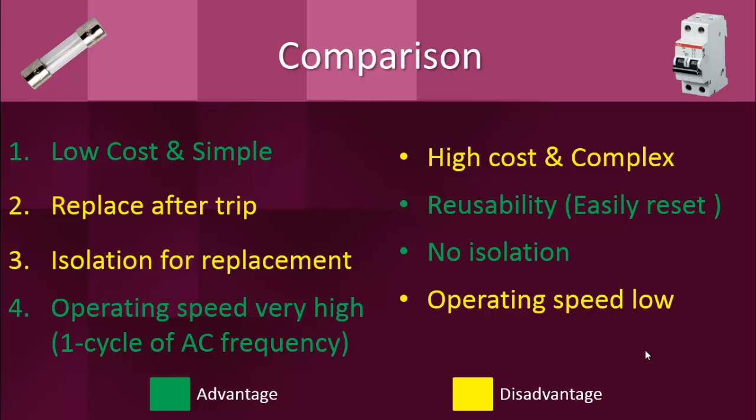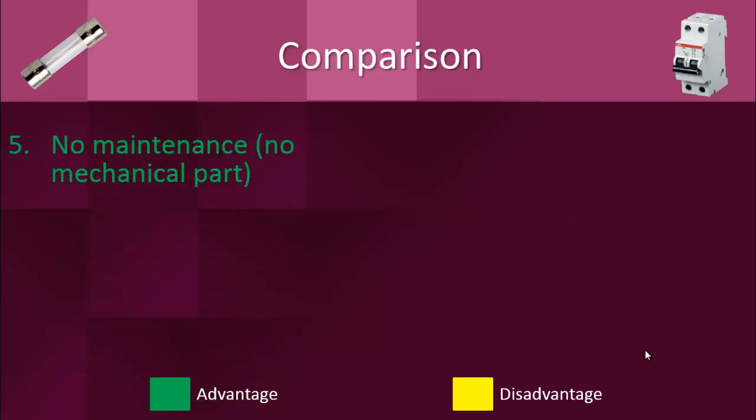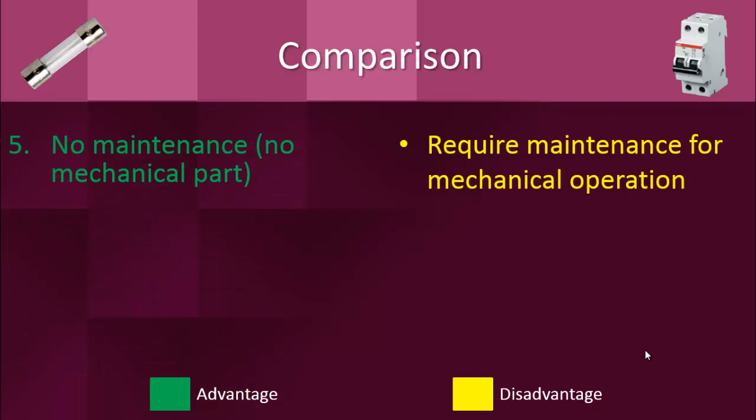A plus point of the fuse is its very high operating speed — it breaks the circuit within one cycle of the AC frequency. Whereas the circuit breaker has a relatively lower operating speed, breaking the circuit within 20 to 50 milliseconds after the overload or short circuit is detected. In case of a fuse, no maintenance is required as there are no mechanical parts, whereas a circuit breaker requires regular maintenance because of its complex mechanical parts.